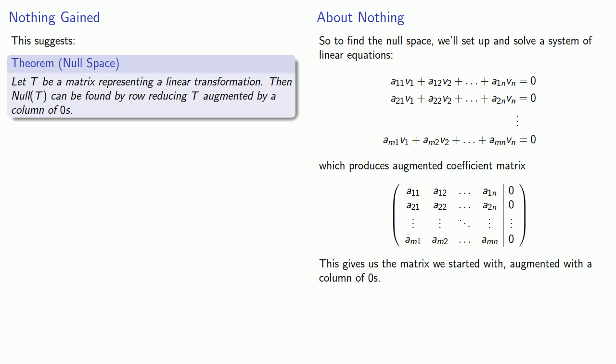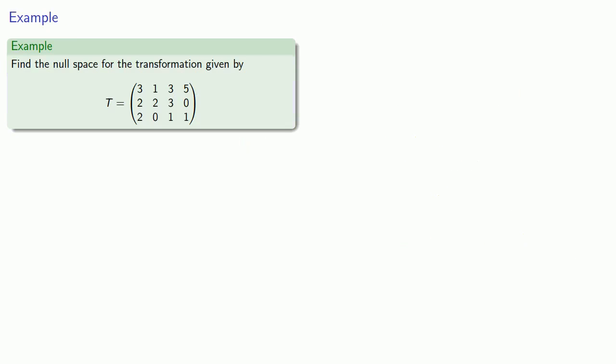Now, one important observation here is that because elementary row operations won't change the values in a column of zeros, we can actually leave the zeros off until the very end of the problem. You might want to think about why that is actually the case. So let's see what we can do.